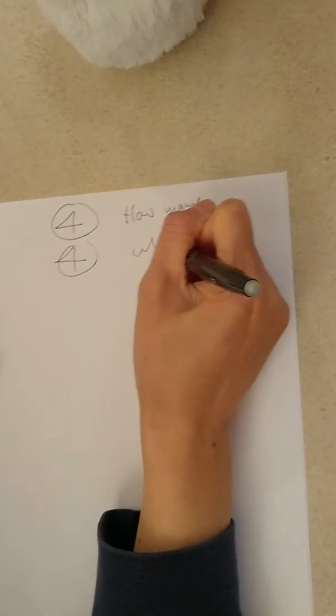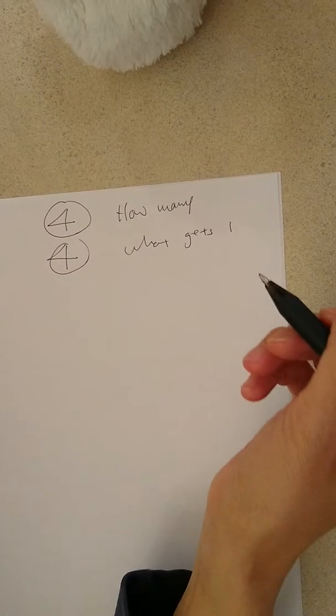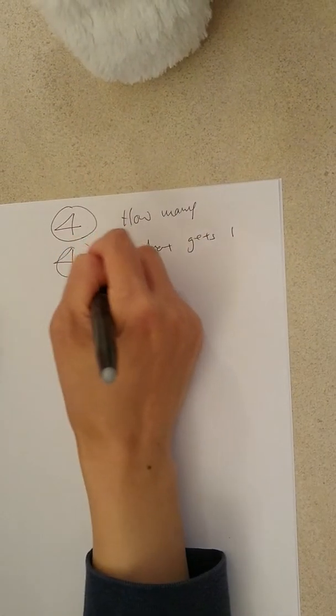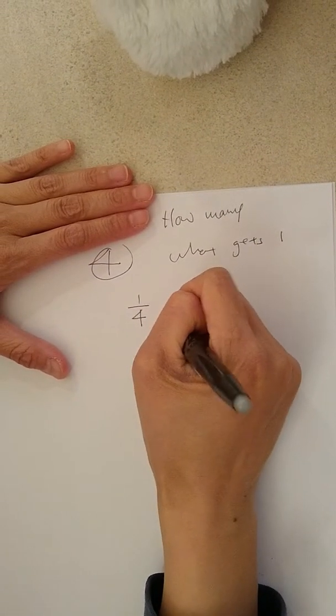Bottom number, what? Gets one. The bottom number is actually a fraction. So if you take this number out, you get one for a quarter. No, it equals to one. Okay.